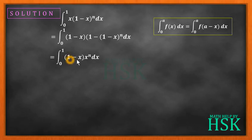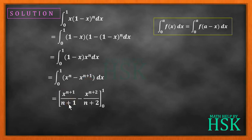You can see that x to the power n can be multiplied inside the bracket to obtain x to the power n minus x to the power n plus 1, and the integrations are very simple. This will be equal to x to the power n plus 1 upon n plus 1 minus x to the power n plus 2 upon n plus 2.